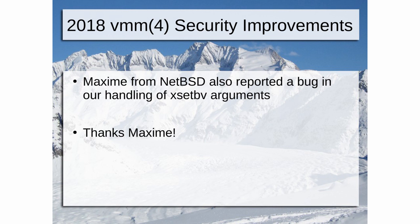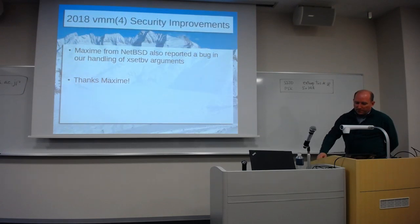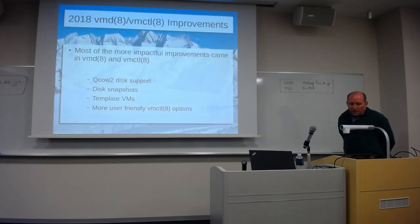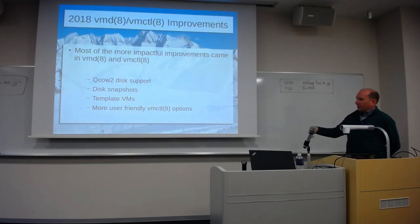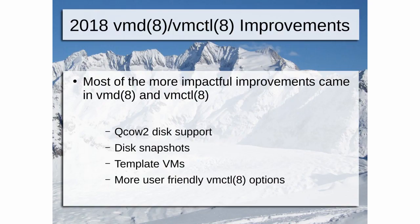Thanks to Maxime from NetBSD, who pointed out a couple of bugs in XSETBV — another floating-point-related instruction — that we were handling incorrectly. We changed how we handle it to be properly implemented. So thanks to Maxime for pointing that out. That's the summary of what we've changed in VMM, the kernel side of the hypervisor. Most of the more impactful improvements, I think, came in VMD and VMCTL last year: specifically support for QCOW2 disks, disk snapshots, template VMs, and more user-friendly VMCTL options.